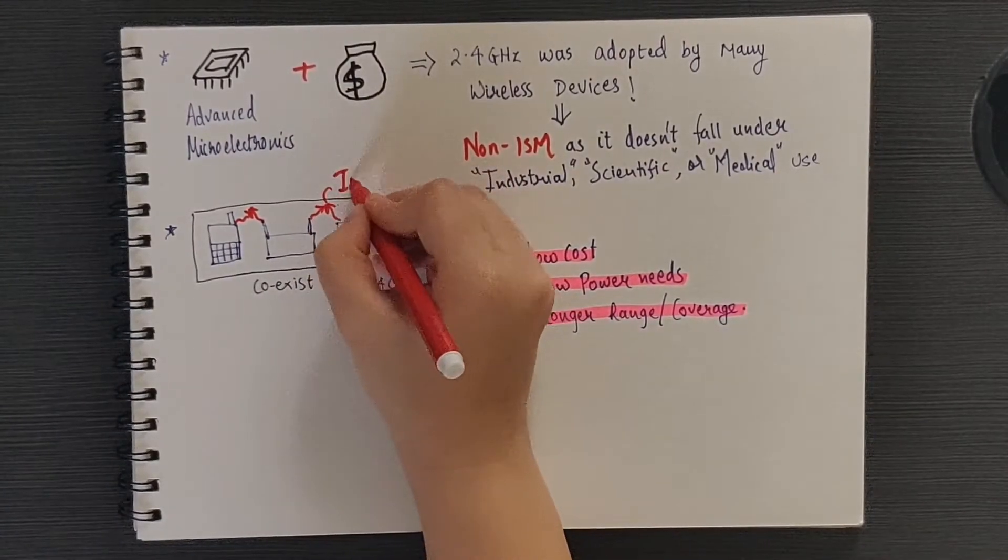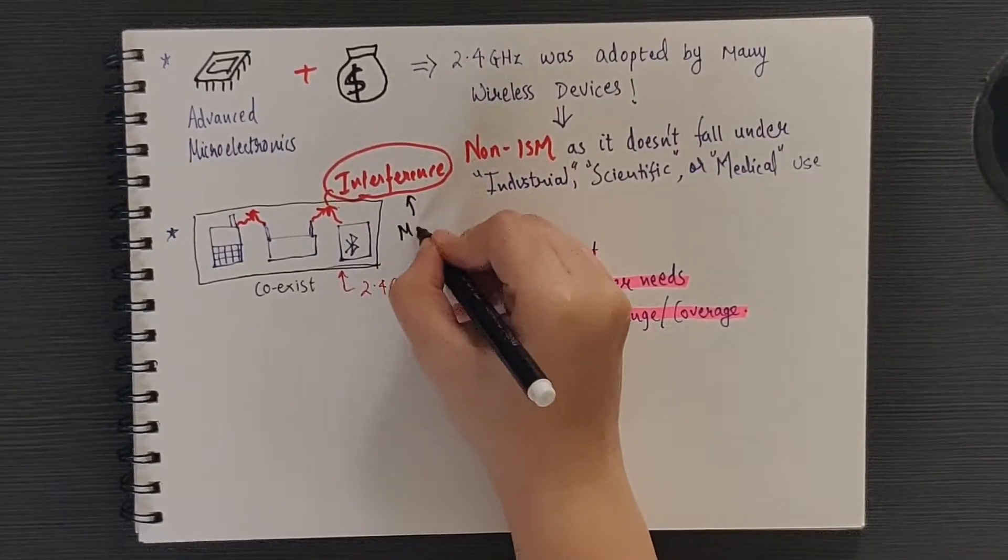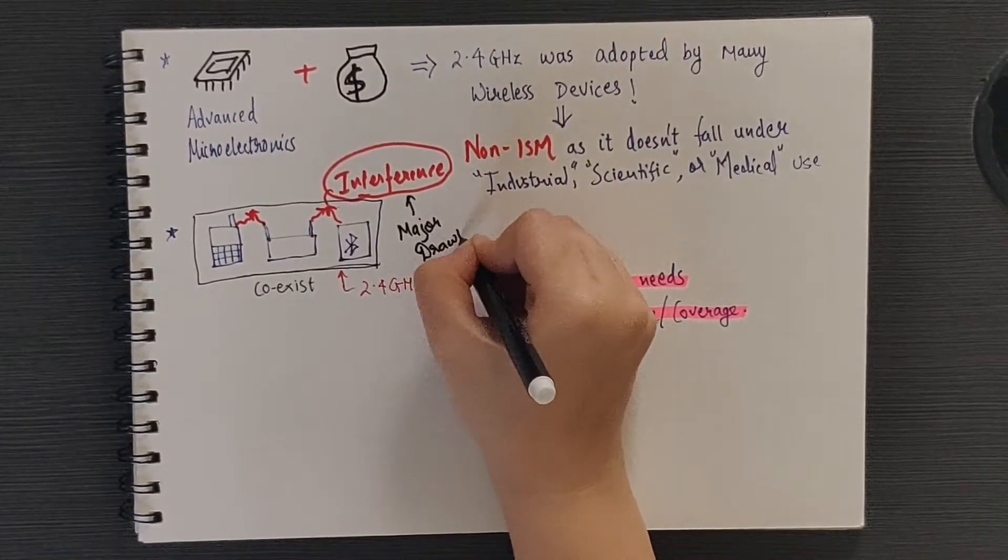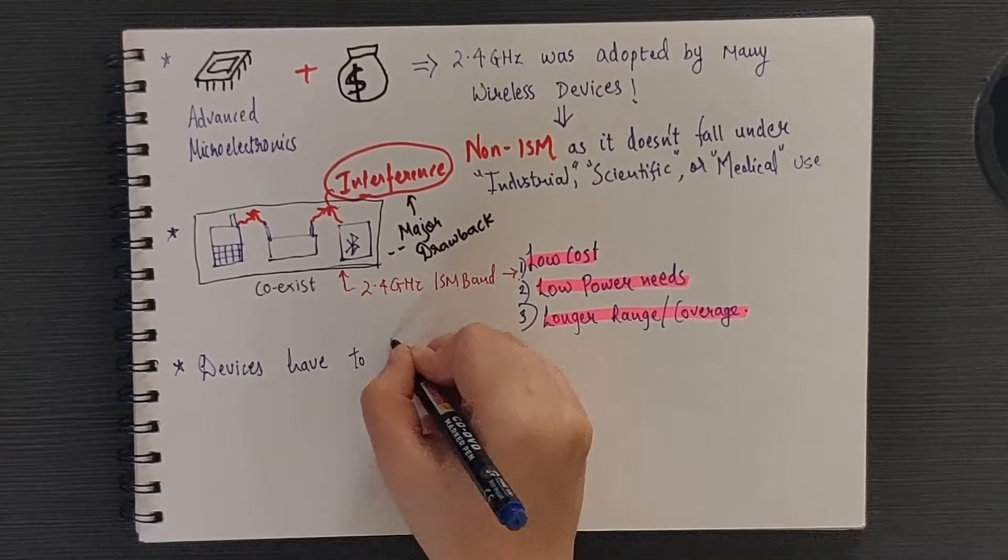As all these devices talk on the same band, it leads to interference, which is also a major drawback of using this band. Thus, all the devices have to fend for themselves so that they can communicate with each other effectively.